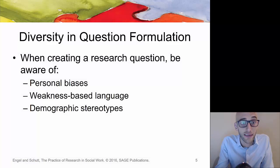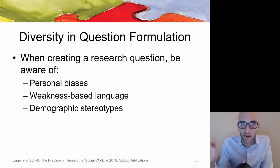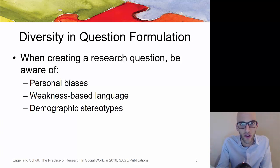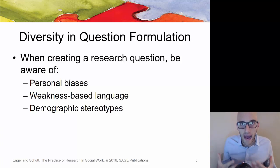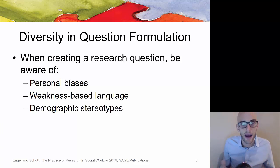When creating a research question you should be aware of personal biases. It's always good to know your worldview and how it may impact your research. Within psychology we take a hard look at implicit biases, and people who are more aware of that are less likely to act biased. We all have worldviews that impact how we look at social problems, and the more aware you are, the less likely you are to be biased.